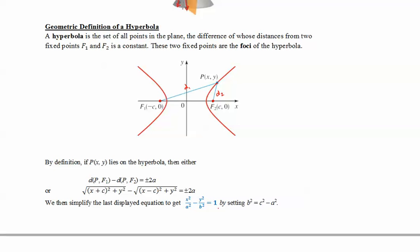And then we simplify it to get to this form: x²/a² - y²/b² = 1. And what we did where we get b, b² is c² - a². We just set b² = c² - a² once we simplify this equation.